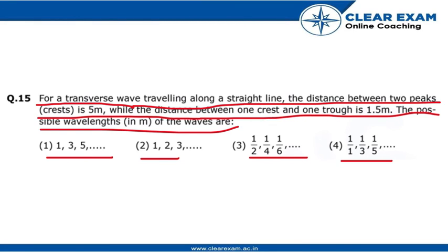We can clearly see that in the fourth option, one of the possible values of the wavelength is given as 1/3. So by the elimination process, we can say none of the other options except option number 4 has the correct answer.